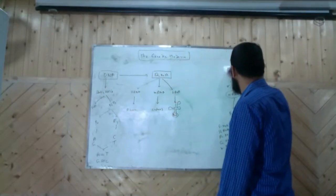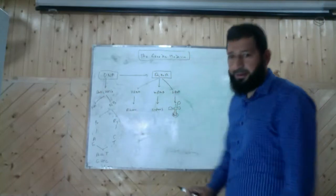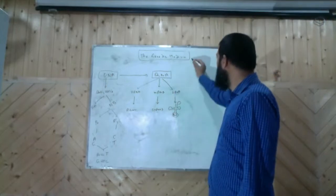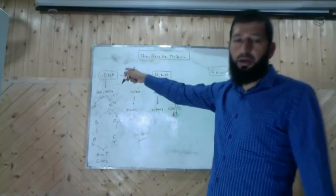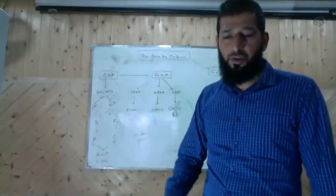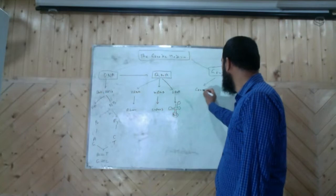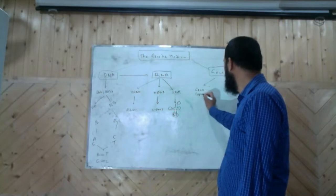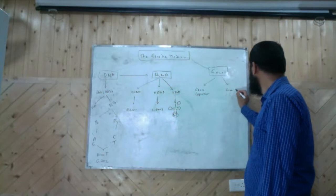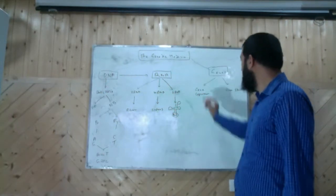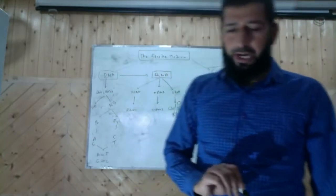Apart from this, the genetic material is arranged in the form of genes. A gene is nothing but a segment of DNA that codes for a divisible product. You have two aspects of genes: one is gene expression and the other is gene structure.